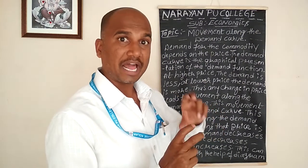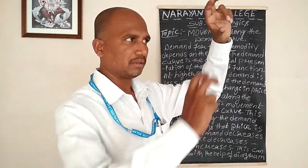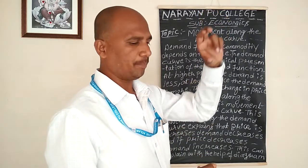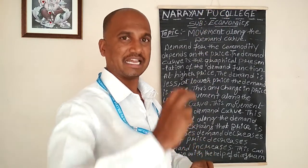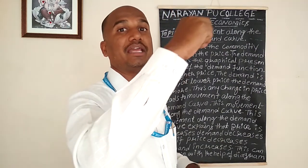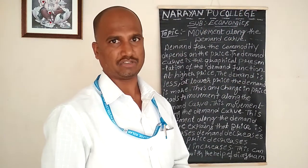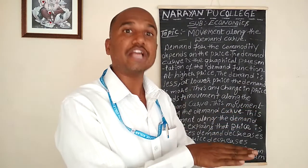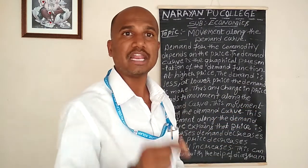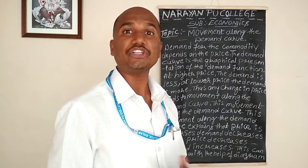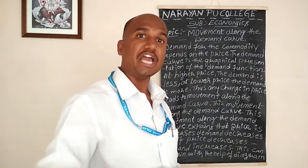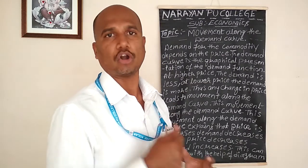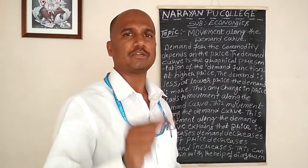When the price is more, demand for the commodities decreases. When price decreases, demand for the commodity increases. There is a negative relationship — an opposite relationship between the price for the commodity and the demand for the commodity. That point must be notable.